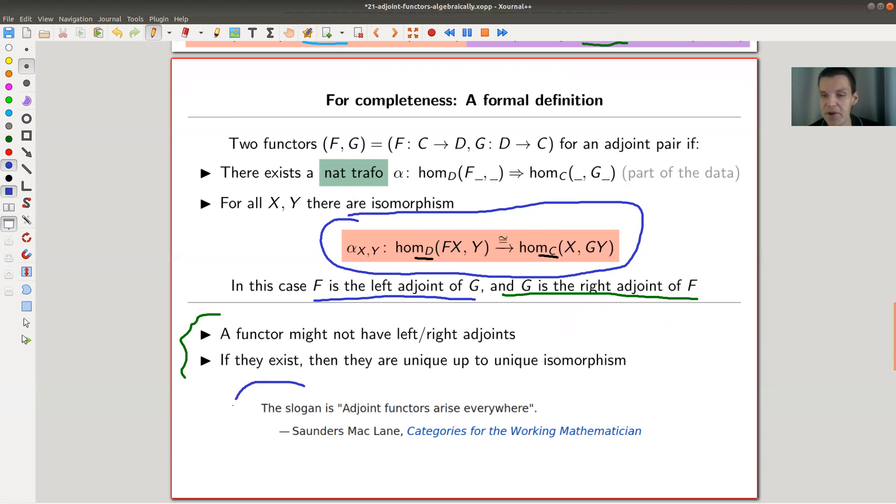So the famous slogan in Categories for the Working Mathematician, in the book, still the book for category theory, is that adjoint functors truly arise everywhere. As I said, this is not quite clear from this definition. But in the end, they do. And I will show you just, I will just have one video just for the examples.